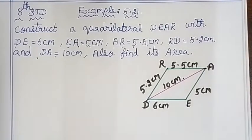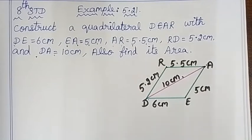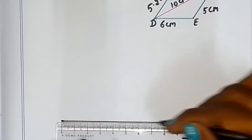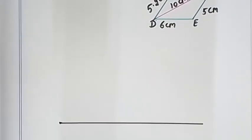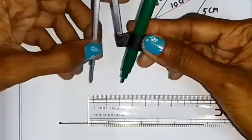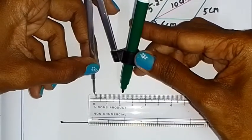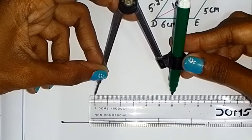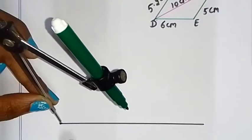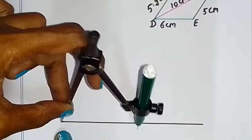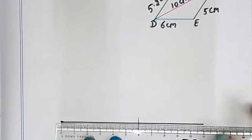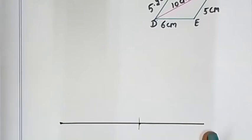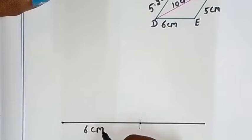First, use the scale. The base is 6cm. We will place a dot and draw the first line. Use the compass to measure 6cm — place the pencil tip at 0, measure to 6cm, and add the dot to mark one arc. Then measure again: baseline from 0, correct to 6cm. So DE equals 6cm is drawn.